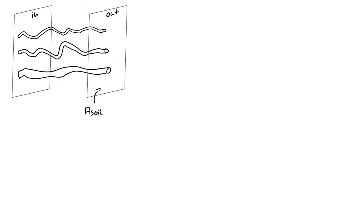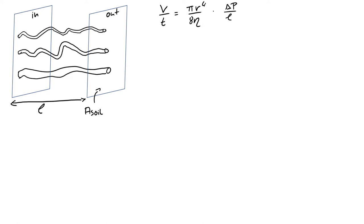Now let's do some math on this simple example. We have tortuous capillaries and have established that flow happens from an area of inflow to an area of outflow, which is the area of the soil. We write the Hagen-Poiseuille law as volume per time equals pi r to the fourth divided by 8 nu times the driving gradient, the pressure difference over some distance L — the straight-line distance between inlet and outlet.